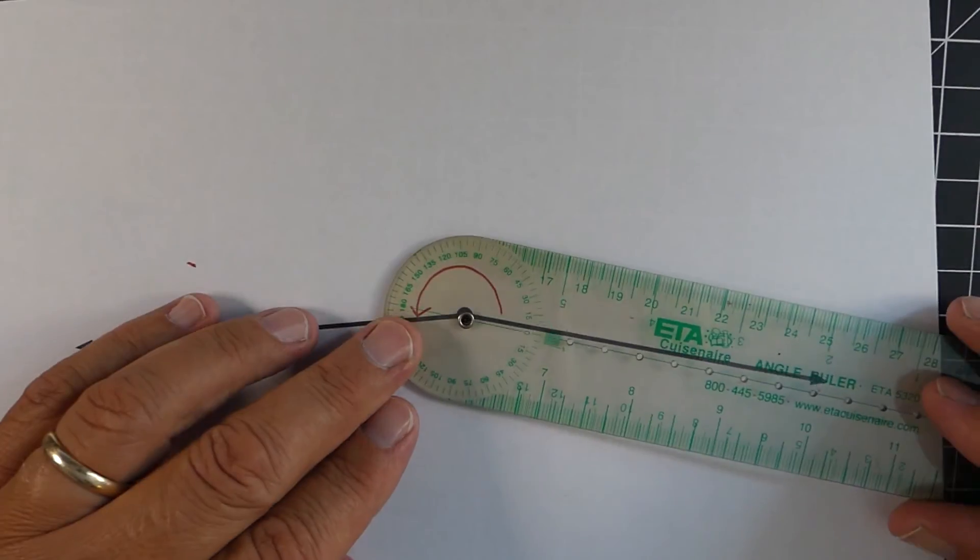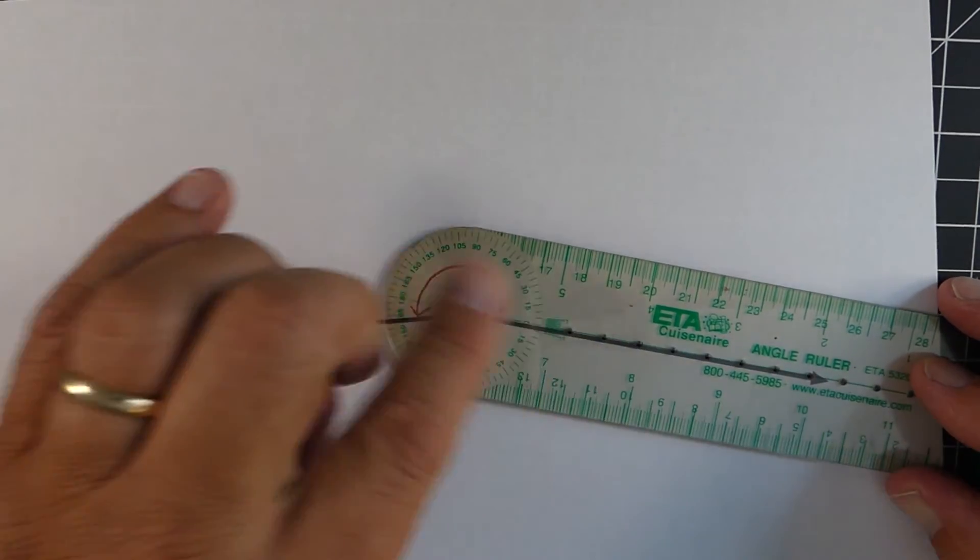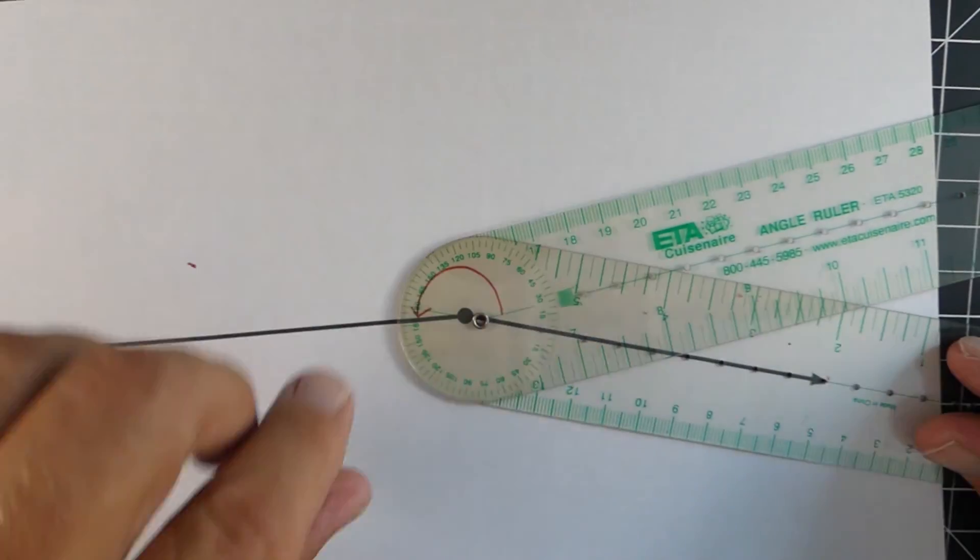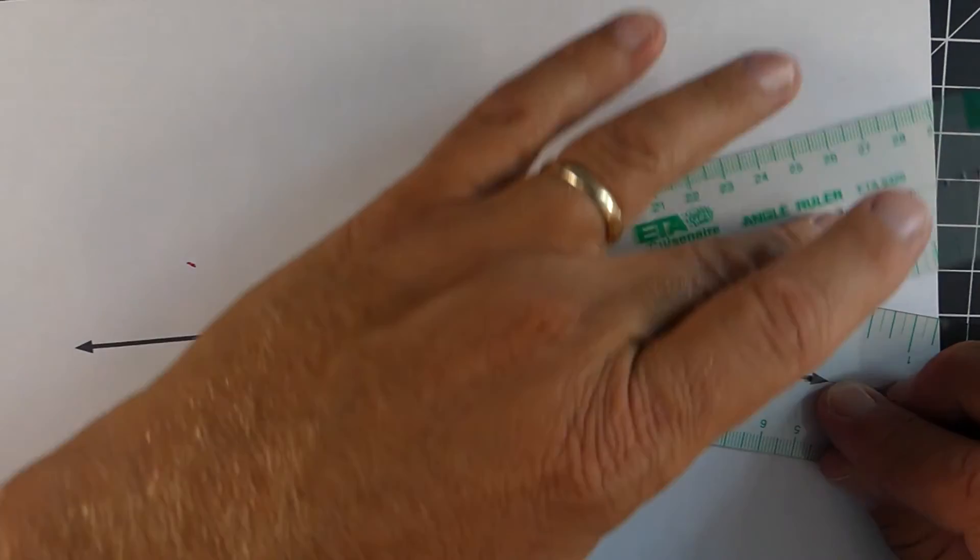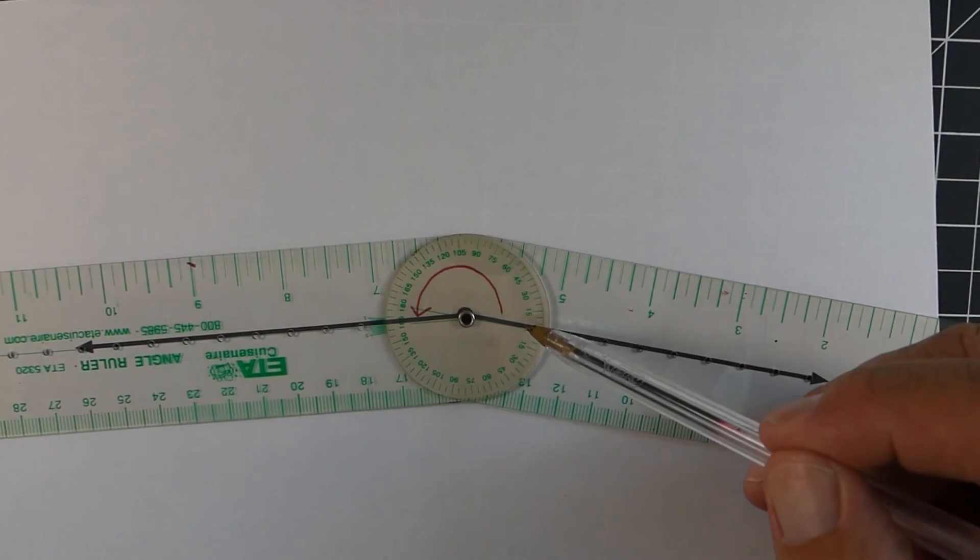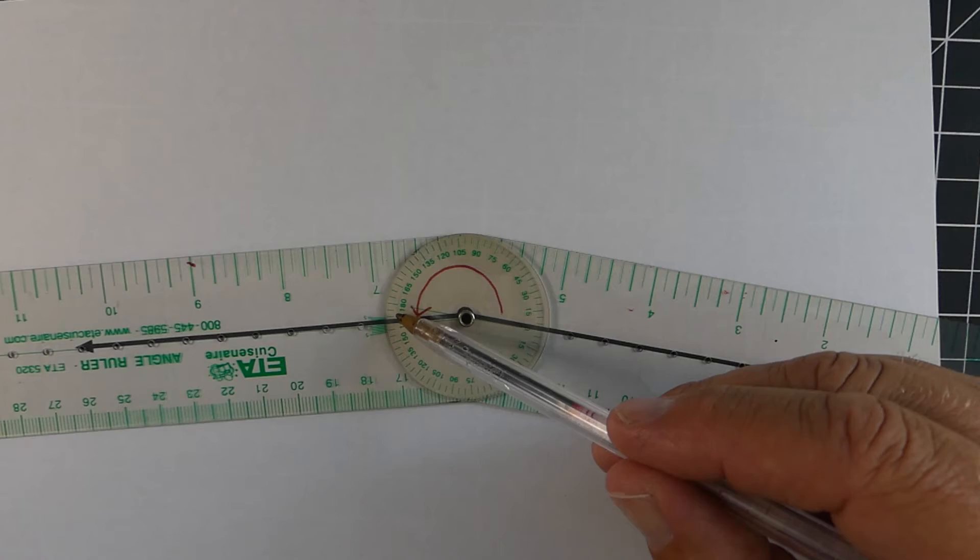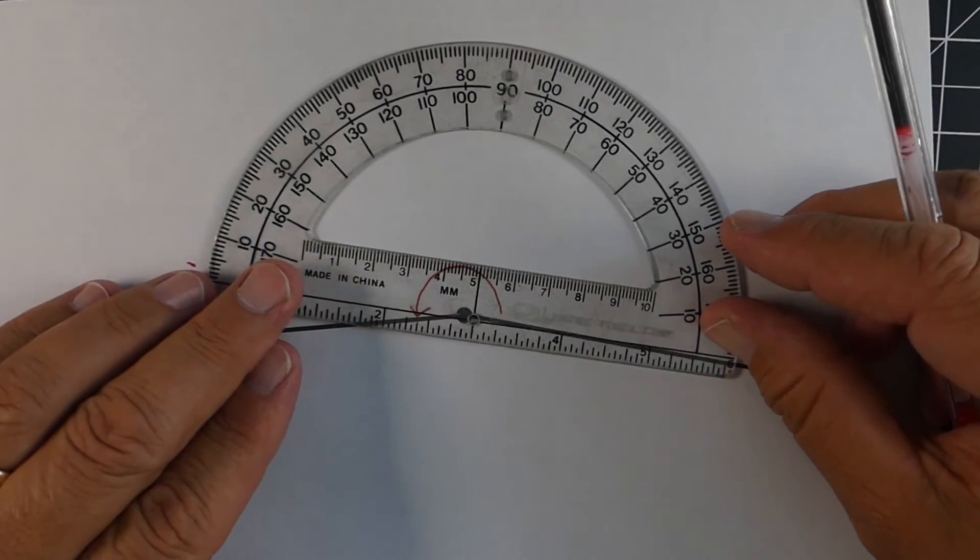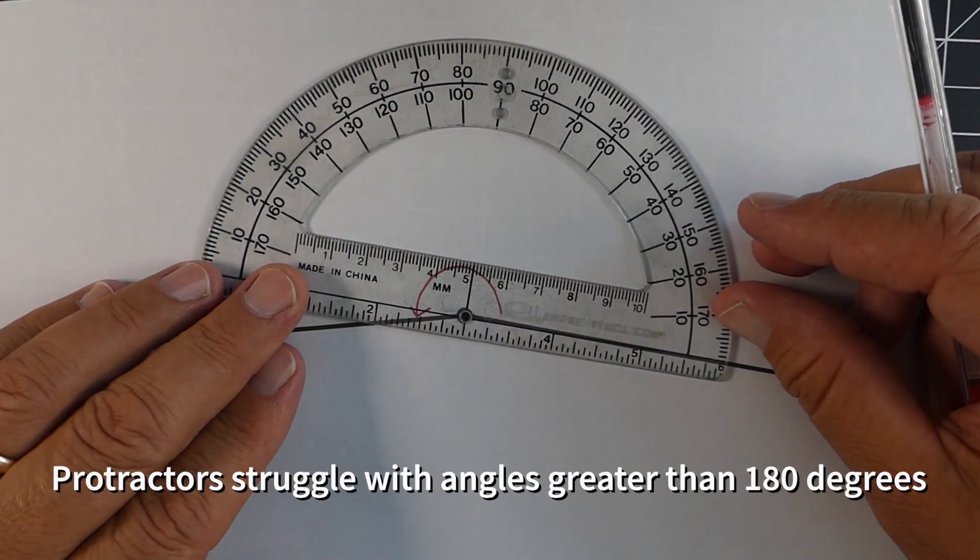The other scenario is if you're dealing with an angle that's greater than 180. So it's more than 180 degrees. With an angle ruler, you would just rotate it until the two green lines are right on top of the two lines of the angle.